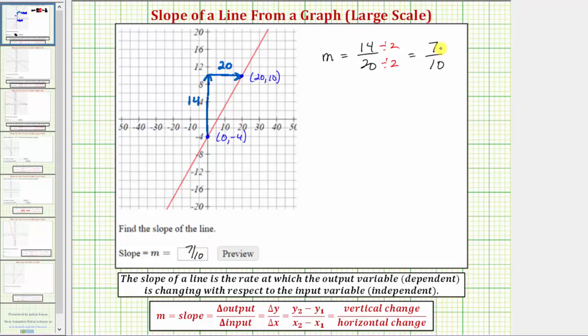This tells us that the output, or y, increases by 7 each time the input, or x, increases by 10. But now let's also show how to find the slope using the slope formula shown here: (y₂ - y₁) divided by (x₂ - x₁). This difference gives us the vertical change, and this difference gives us the horizontal change. To keep things organized,